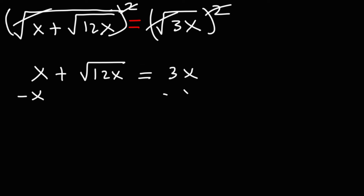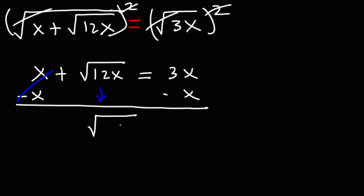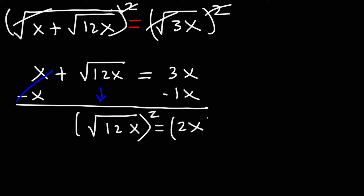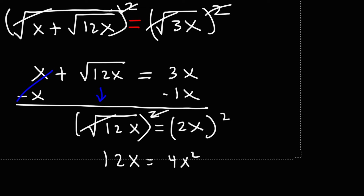Now we can subtract both sides by x. So we're going to have the square root of 12x equal to 3x minus x, which is 2x. Now we need to take the square of both sides again. These two will cancel, and we'll be left with 12x on the left. On the right, 2x squared — or 2x times 2x — that's going to be 4x squared.